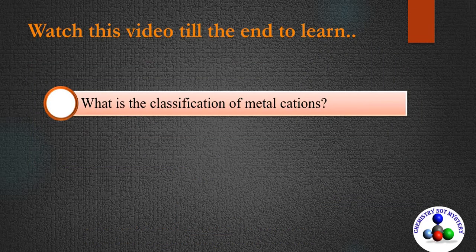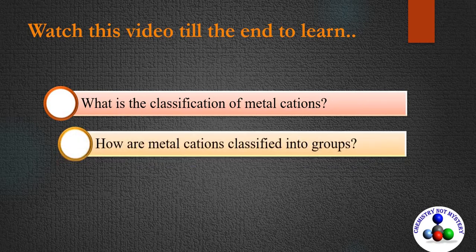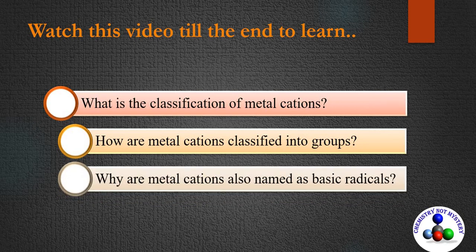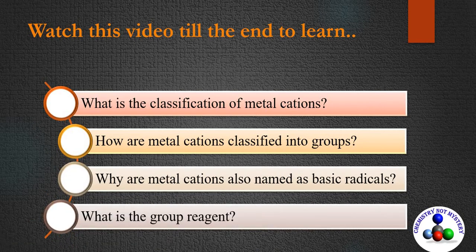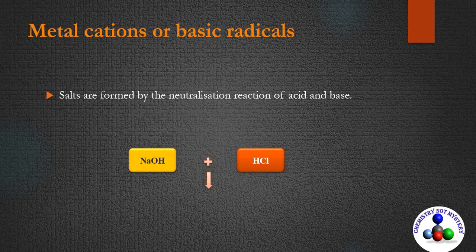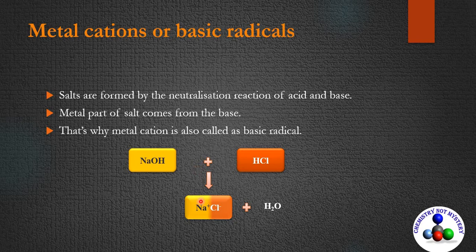What is the classification of metal cations, how are metal cations classified into groups, why are metal cations also named as basic radicals, and what is the group reagent? First, let's find out why metal cations are named as basic radicals. Salts are formed by the neutralization reaction of acid and base, and the metal part of the salt comes from the base — that's why metal cations are also called basic radicals.